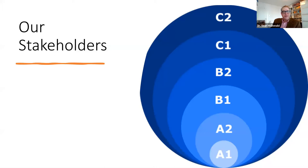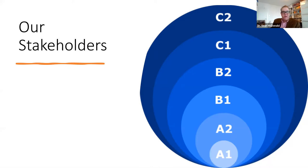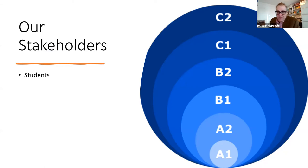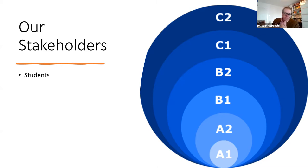Stakeholders is a really important question. For language testing and for teaching, we really have to consider who's involved — who are the stakeholders. The number one stakeholder we see most is the students — those are the people taking the test. But we sometimes forget all the other people who are stakeholders at different levels. If a student achieves level B2 or doesn't, it's important for the student. Who else is a stakeholder in this process?